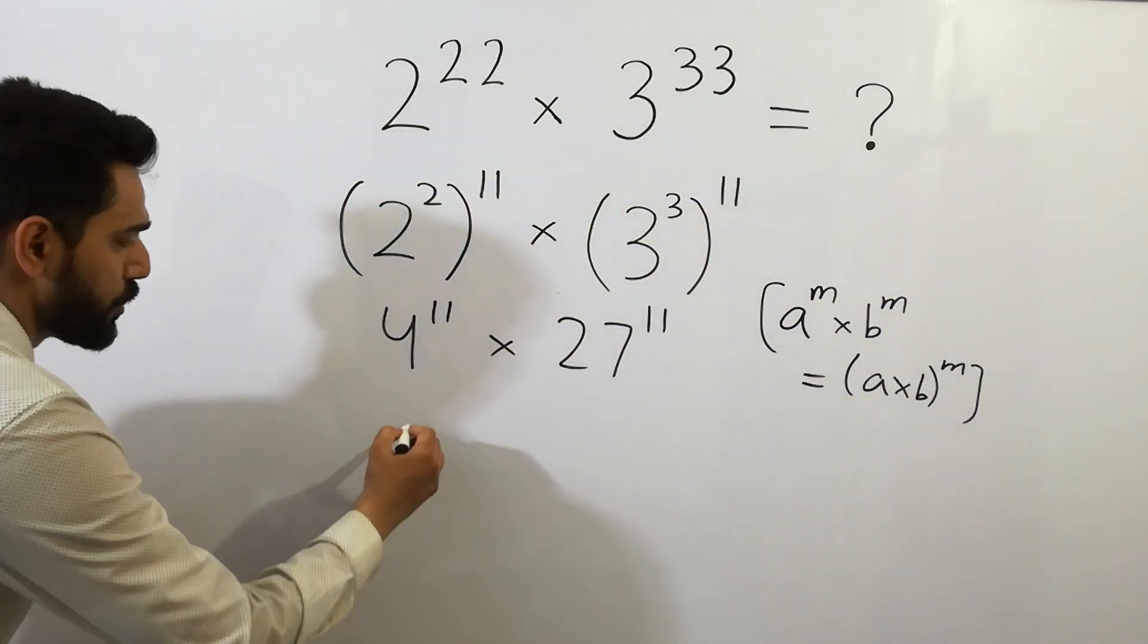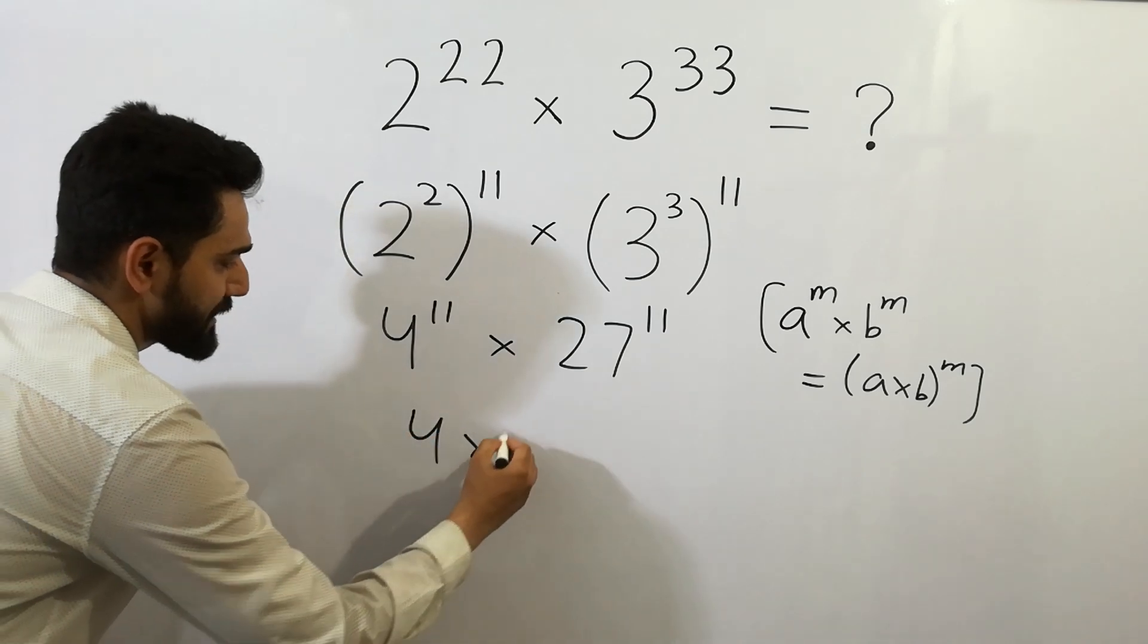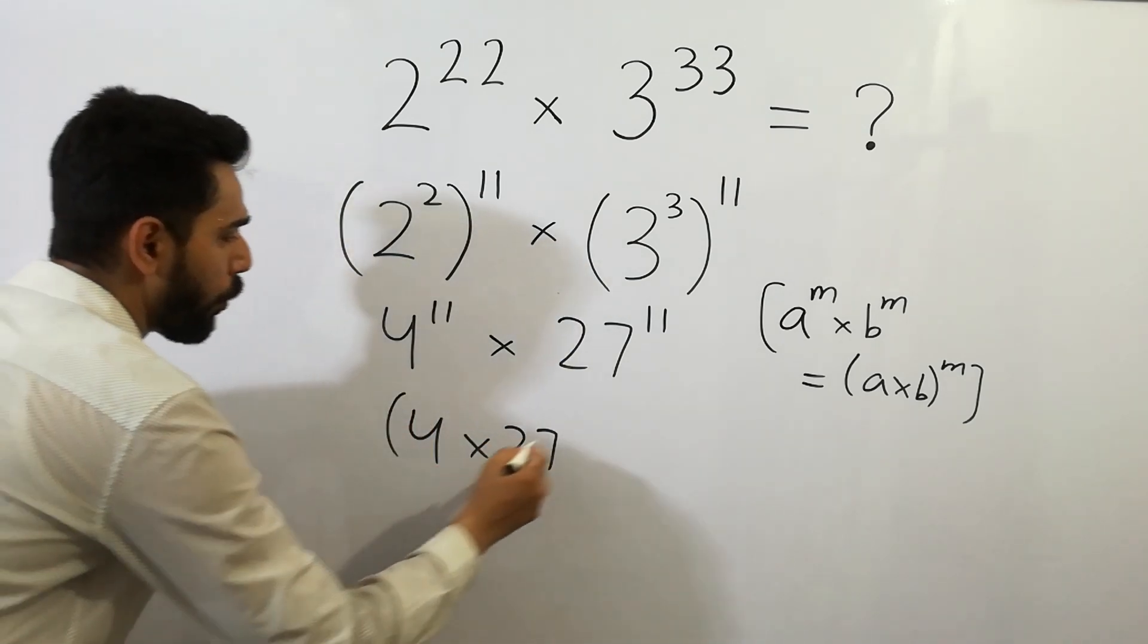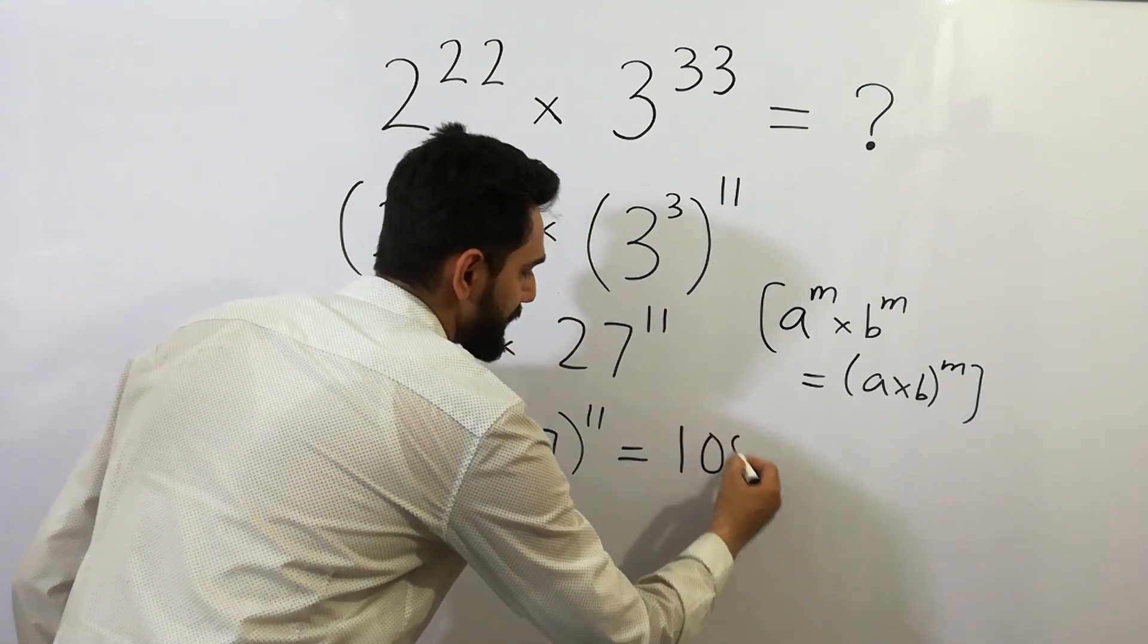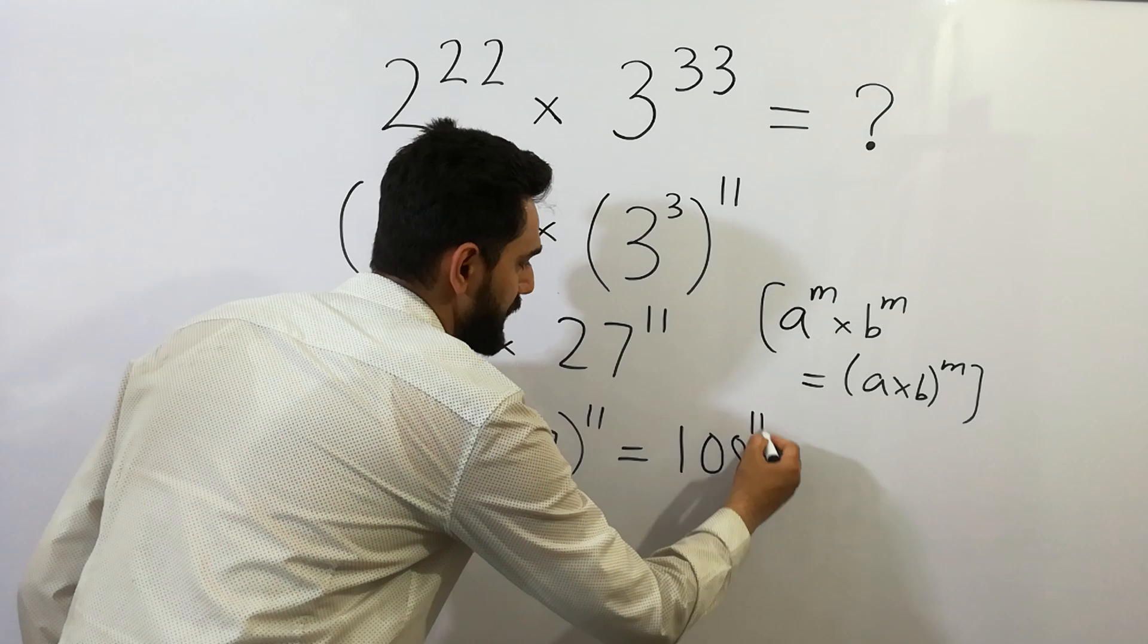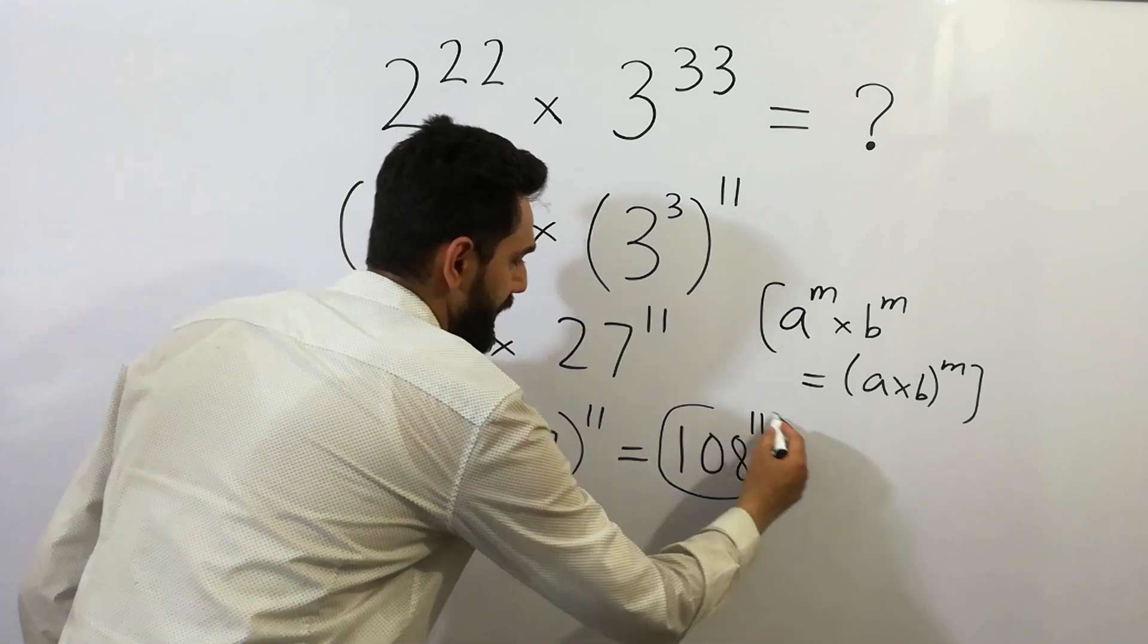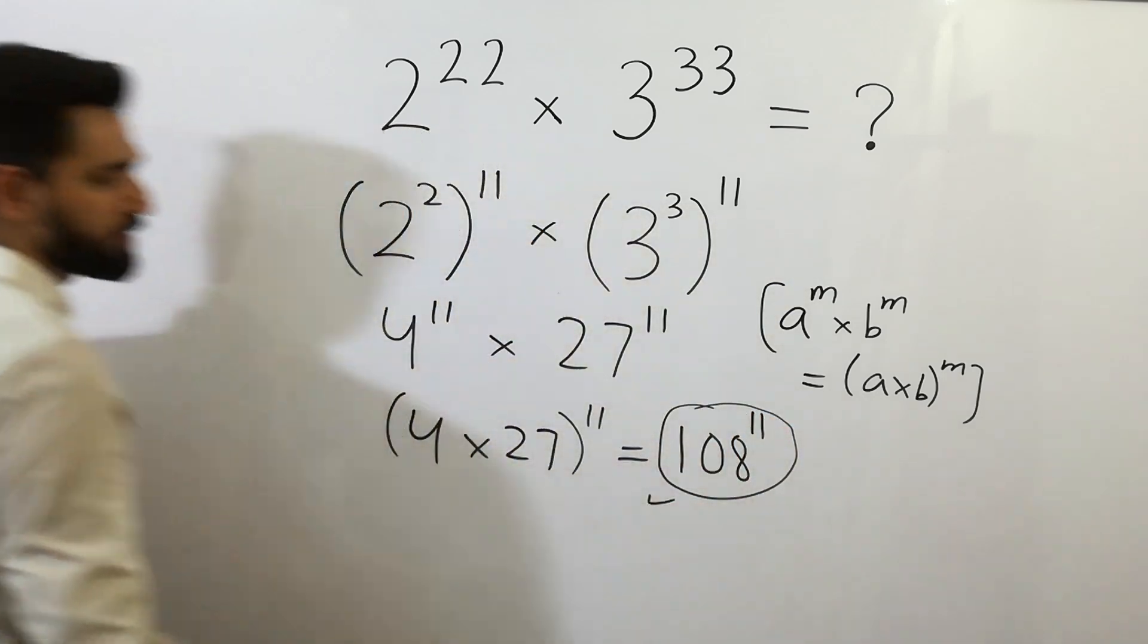So we can write here 4 times 27 to the whole power 11, which is equal to 108 to the power 11. So that's our right answer. Okay, bye.